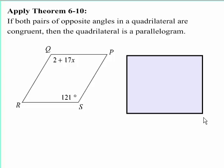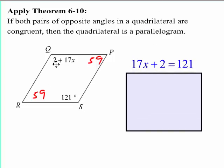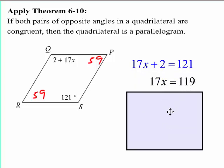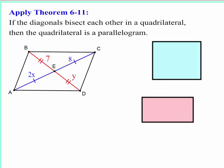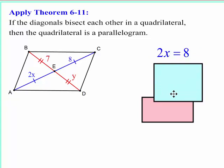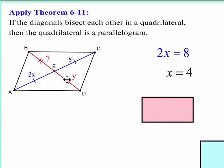Theorem 6-10 says if both pairs of opposite angles are congruent, then it's a parallelogram. That means this would have to be 59 degrees and this would have to be 59 degrees — that's your pair of opposite angles that have to be congruent. Likewise, these two have to be congruent to each other, so the setup is 17x + 2 = 121. Subtract 2 from each side, divide by 17, we get x = 7. For the diagonals bisecting each other: 2x = 8, so x = 4, and y = 7.